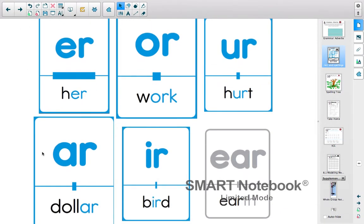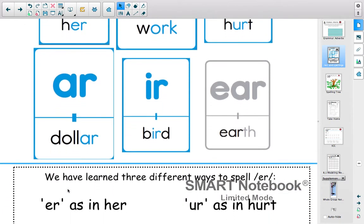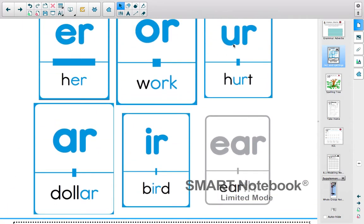Good morning. Today we're going to talk about a sound that we've worked on before, the E-R. But today we're going to talk about how there's different ways to spell the E-R. We've had before the I-R and the U-R, but today we're going to talk about the O-R and the A-R.